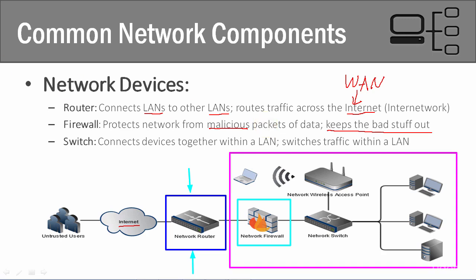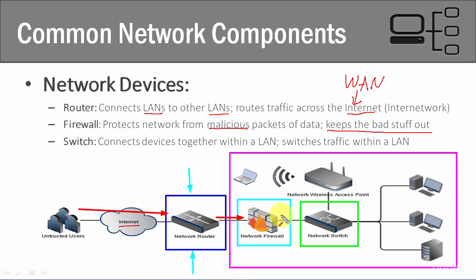Lastly, let's talk about a switch. Here's our switch, once we move further into our network. We have data coming in to the network through the router, it goes into our network through the firewall. The firewall says this data is clean, it goes into our switch. The switch connects everything on our network together and switches traffic, determining where traffic goes on the network.